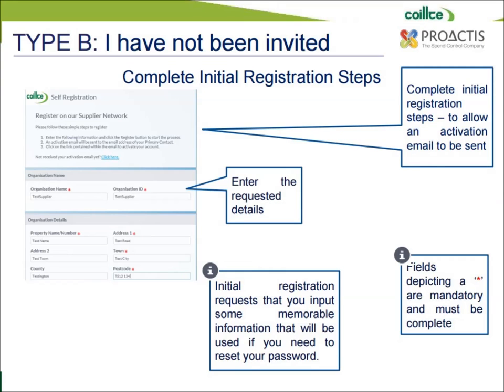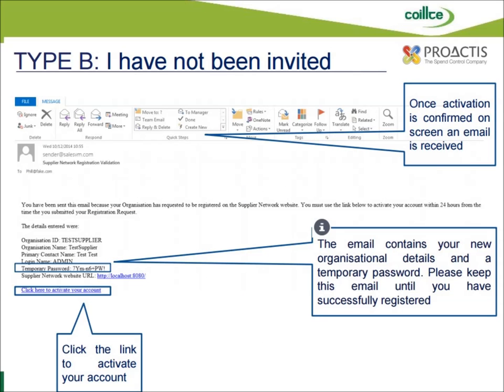Next, you must complete the initial registration steps to allow an activation email to be sent. Enter the requested details and ensure that all mandatory fields marked by a red star are completed. Once activation is confirmed on screen, an email is received. The email you receive will contain your new organizational details and a temporary password. Please ensure that you keep this email until you have successfully completed the registration process. Your Paractus account will be activated by clicking the link 'Click Here to activate your account.'